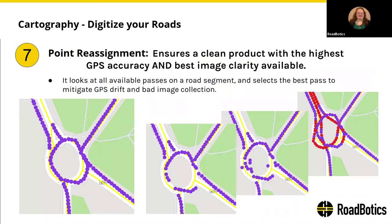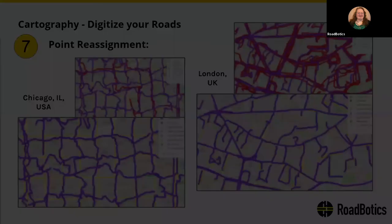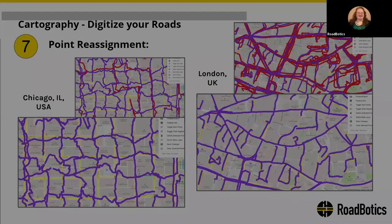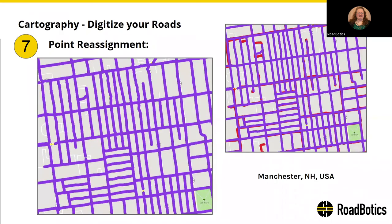After data collection, our assessment products use point reassignment to select the best imagery and GPS trail to ensure an accurate product, again using OSM as the base map. Point reassignment looks at all available passes on a road segment and selects the best pass to mitigate GPS drift and bad image collection. Some areas have extreme GPS drift that is difficult to mitigate, especially in large cities with tall buildings like Chicago and London. While in other areas, the GPS is near perfect, drift is minimal, and GPS trails are spot on.